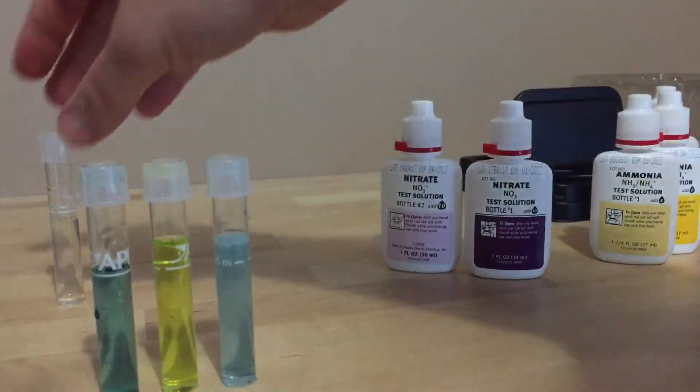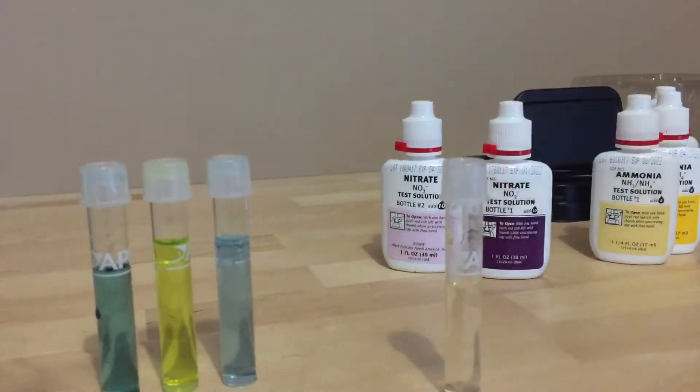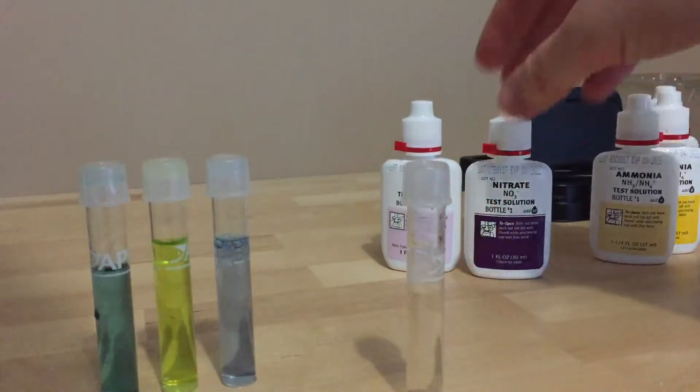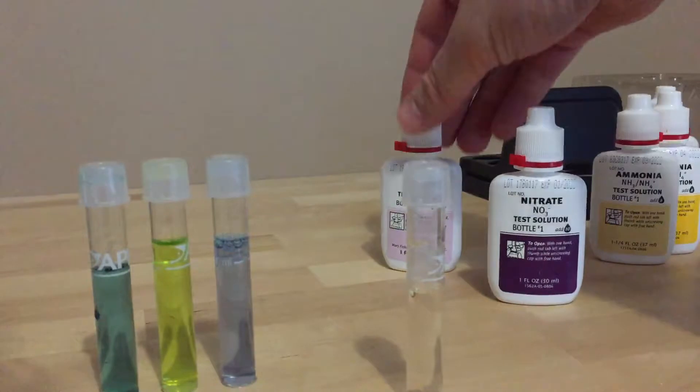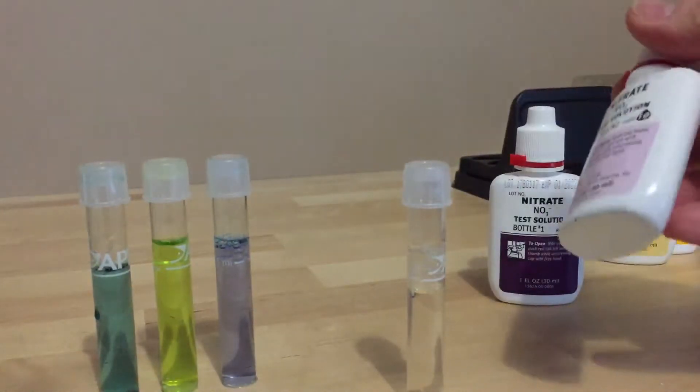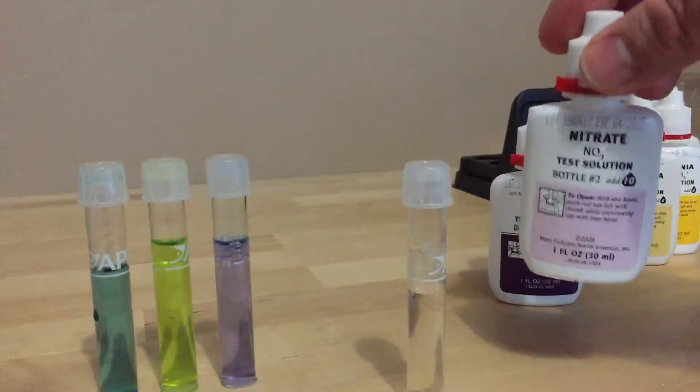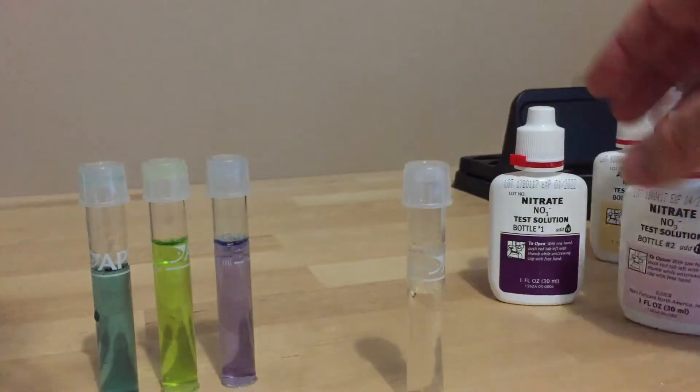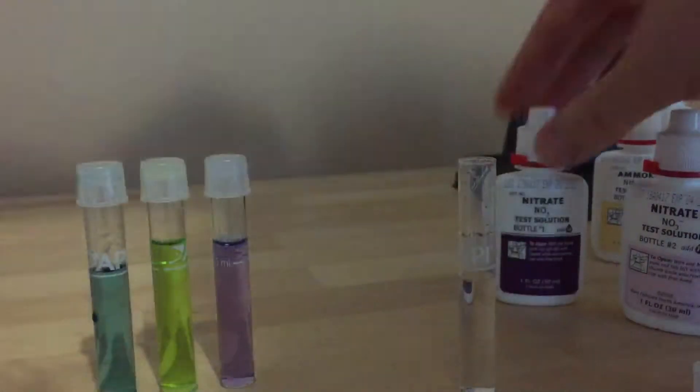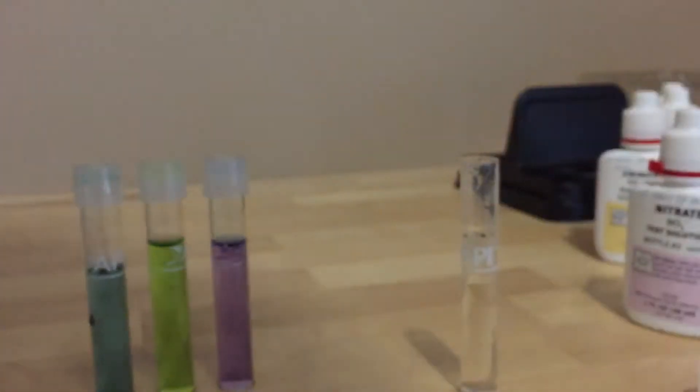And then the final one is nitrate. So this is probably the most complicated of them all. There's two bottles for this one and the second bottle sometimes you need to shake it quite violently just because it can go a bit solid inside. So the first thing to do is, we start with the bottle one and you add ten drops.